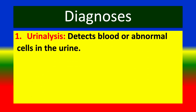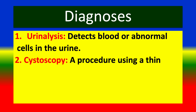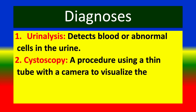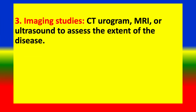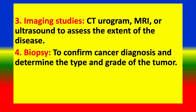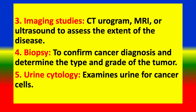Diagnosis: 1. Urinalysis — detects blood or abnormal cells in the urine. 2. Cystoscopy — a procedure using a thin tube with a camera to visualize the inside of the bladder and obtain tissue samples for biopsy. 3. Imaging studies — CT urogram, MRI, or ultrasound to assess the extent of the disease. 4. Biopsy — to confirm cancer diagnosis and determine the type and grade of the tumour. 5. Urine cytology — examines urine for cancer cells.